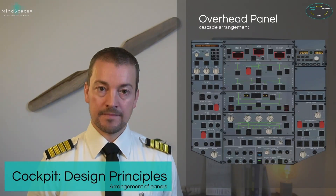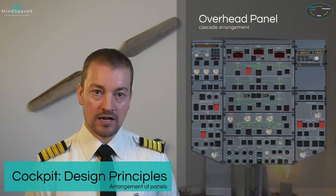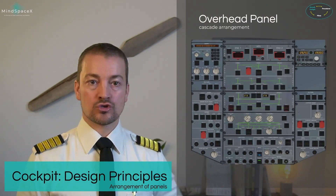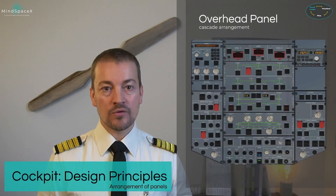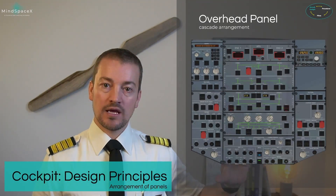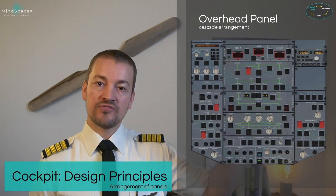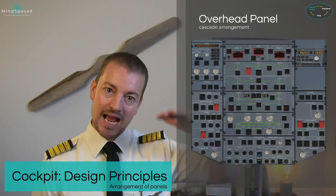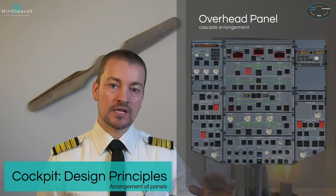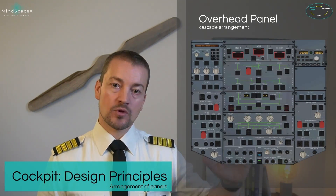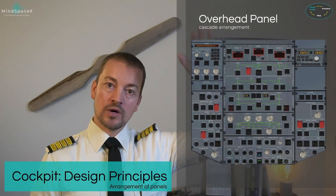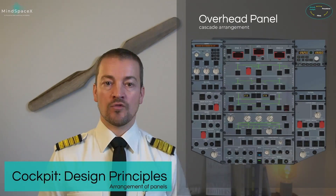Let's start overhead. The overhead panel uses a cascade arrangement for all the system controls. Cascade arrangement means this patchwork — you can see how each system fits like a block onto each other and are stacked on top of each other. Down here you have the front windscreen, which means this is the front portion of the overhead panel, and then as you go up, you are looking backwards on the overhead panel.